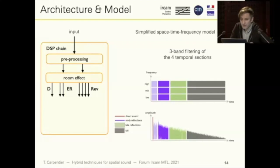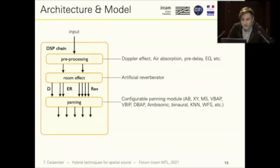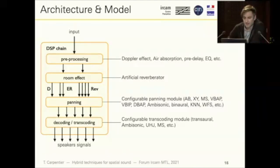In our simple model, these four temporal sections are also filtered in three frequency bands — low, mid, high — giving us three bands and four segments, so 12 degrees of freedom. Then the different signals are sent to a panning module, which is very flexible and implements pretty much all state-of-the-art spatialization techniques, such as VBAP, ambisonics, binaural, and wave field synthesis. Finally, there is an optional transcoding module that can transcode from one format to another. In the end, we get the loudspeaker feed signals.